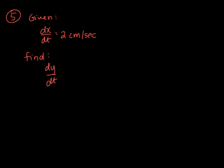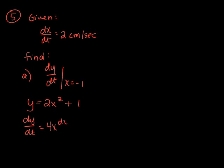We have been given dx/dt = 2 centimeters per second, and they would like us to find dy/dt for different particular values of x. In part A they want us to find dy/dt when x = -1. The equation they gave us is y = 2x² + 1. We can go ahead and take a derivative.